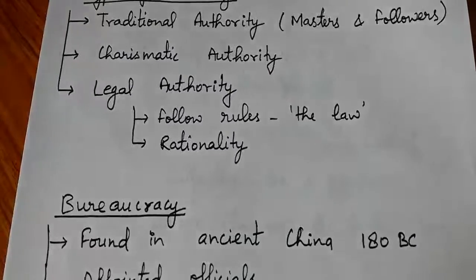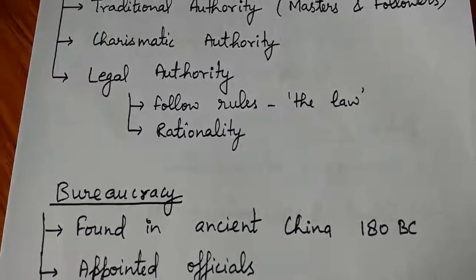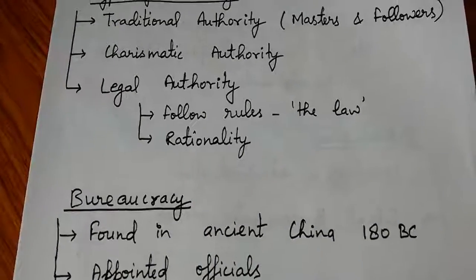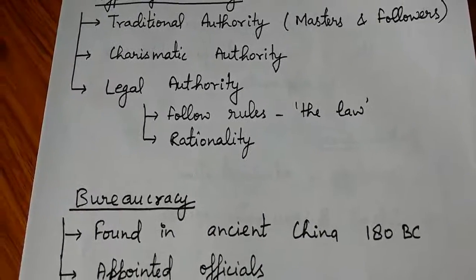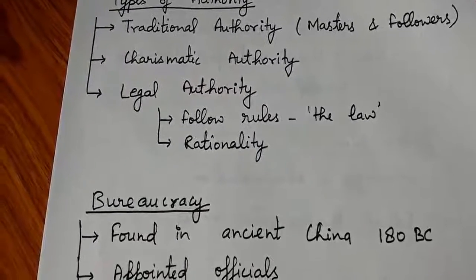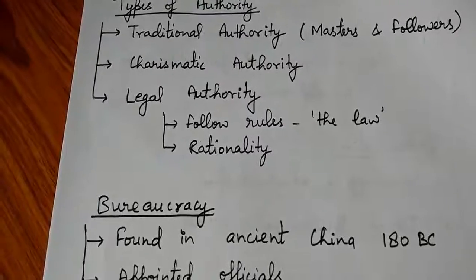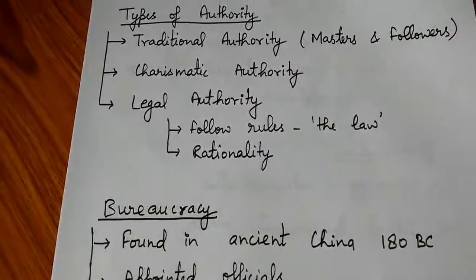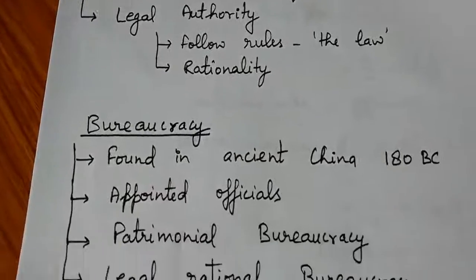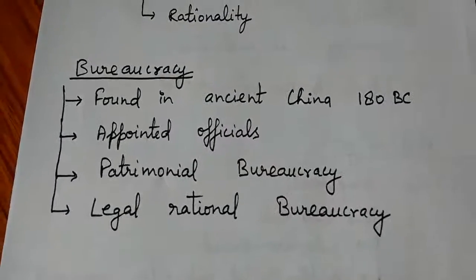The third type is legal authority, which is based on rules and laws. Its second component is rationality. Legal-rational authority is the best type of authority — it depends on written rules and regulations and derives its authority from the rationality of the people who follow those laws.